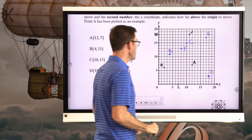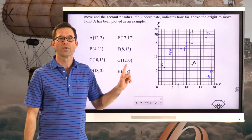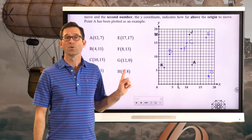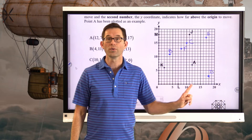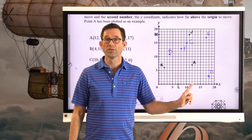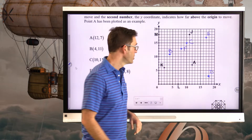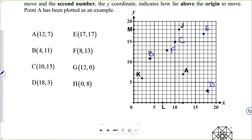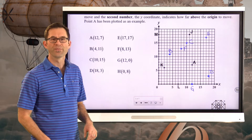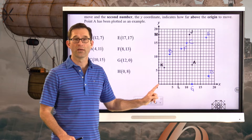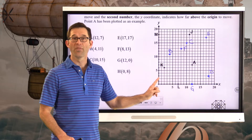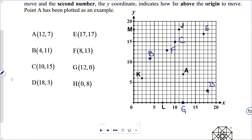Let's talk about those last two. I always struggle a little when one of the two coordinates is 0. For G at 12 comma 0, the 12 tells me to go 12 units to the right and the 0 tells me I'm not going up or down at all — right here. For H at 0 comma 8, the 0 means I shouldn't go any distance to the right, but then I go 8 units up — right there.